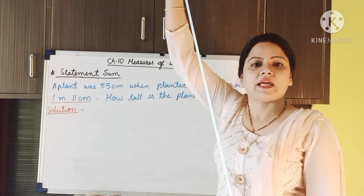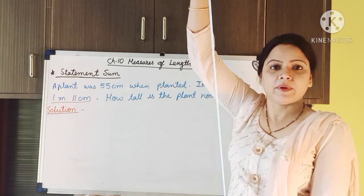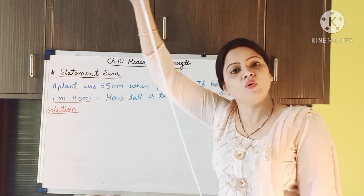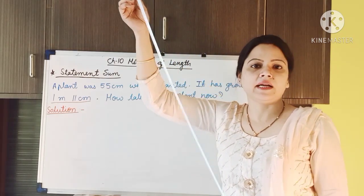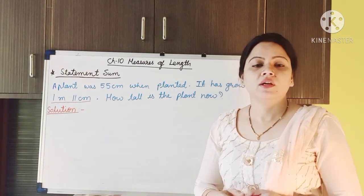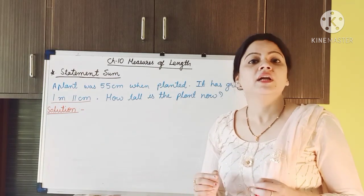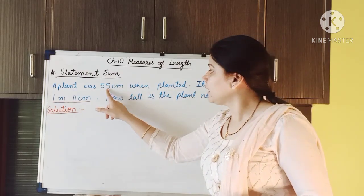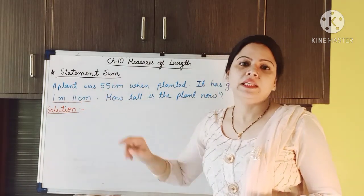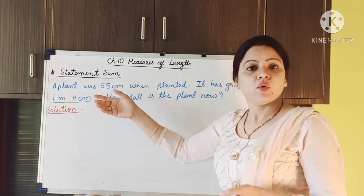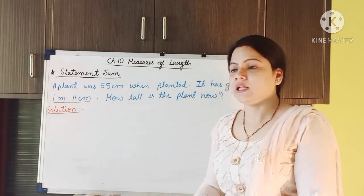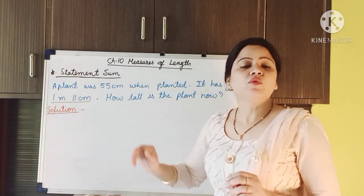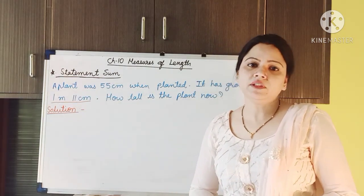This is not the current height of the plant — it has grown 1 meter 11 centimeter more in the garden. So now we have to find out what is the height of the plant right now. Here we have to add these two lengths, because 55 centimeter is the length when the plant was planted, and now we have to add the grown length to find the current length of the plant.